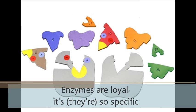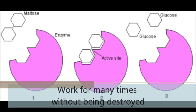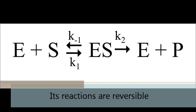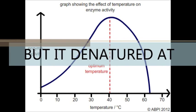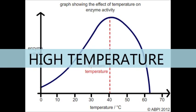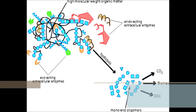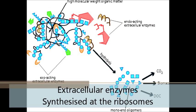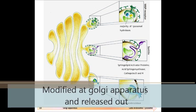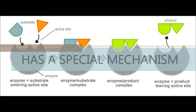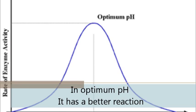Enzymes are highly specific, work many times without being destroyed. Their reactions are reversible. They denature at high temperature. Extracellular enzymes work outside the cell. They are synthesized at the ribosome, modified at the Golgi apparatus, and released out. Enzymes have a special mechanism — the lock-and-key function.